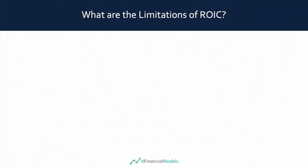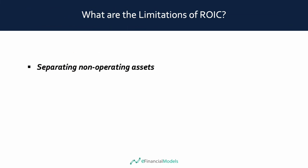ROIC is a great financial ratio when analyzing a company, but what are its limitations? Non-operating assets: it can be very difficult to identify and separate non-operating assets, and EBIT might in some cases include costs or income related to non-operating assets that would need to be adjusted. Depreciation: EBIT and NOPLAT are calculated after deducting depreciation, which is a non-cash expense that depends on the estimated useful life of an asset. Therefore, depreciation can potentially be manipulated, leading to an inaccurate calculation of ROIC.